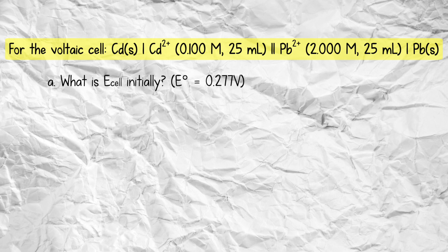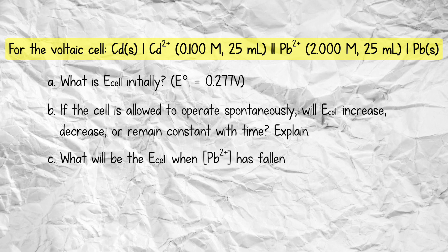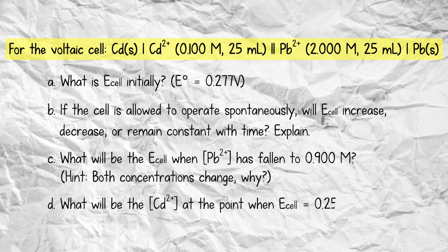E-naught is 0.277 volts. Part B: if the cell is allowed to operate spontaneously, will E cell increase, decrease, or remain constant with time? Explain. Part C: what will be E cell when the lead 2-plus ion concentration has fallen to 0.9 molar? Hint — both concentrations change. Why? And Part D: what will be the cadmium 2-plus ion concentration at the point when E cell equals 0.254 volts?